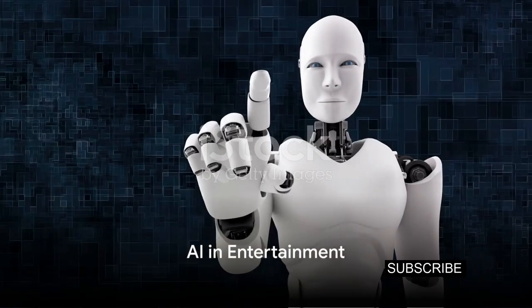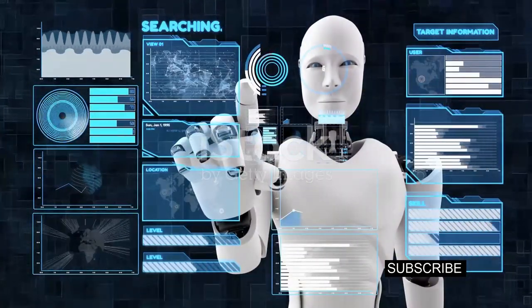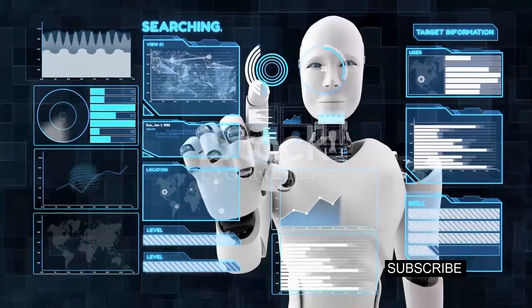Let's shift gears and look at the entertainment industry. Ever heard of Scriptbook? It's an AI system that can predict a film's box office success before it's even produced, based on the screenplay's analysis.